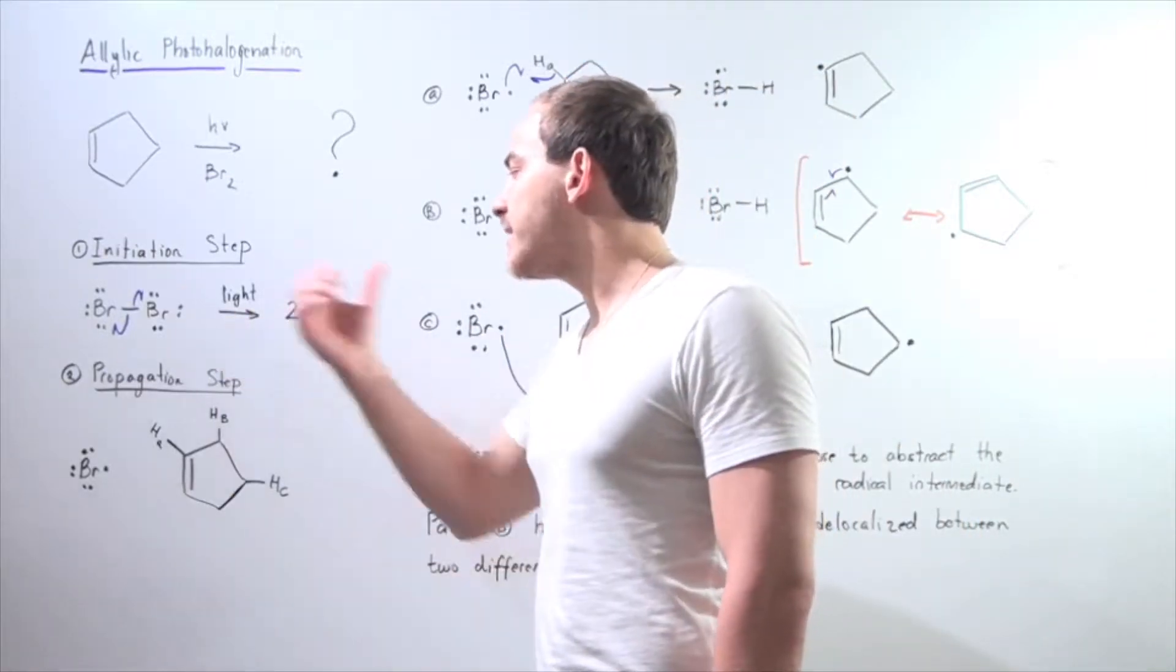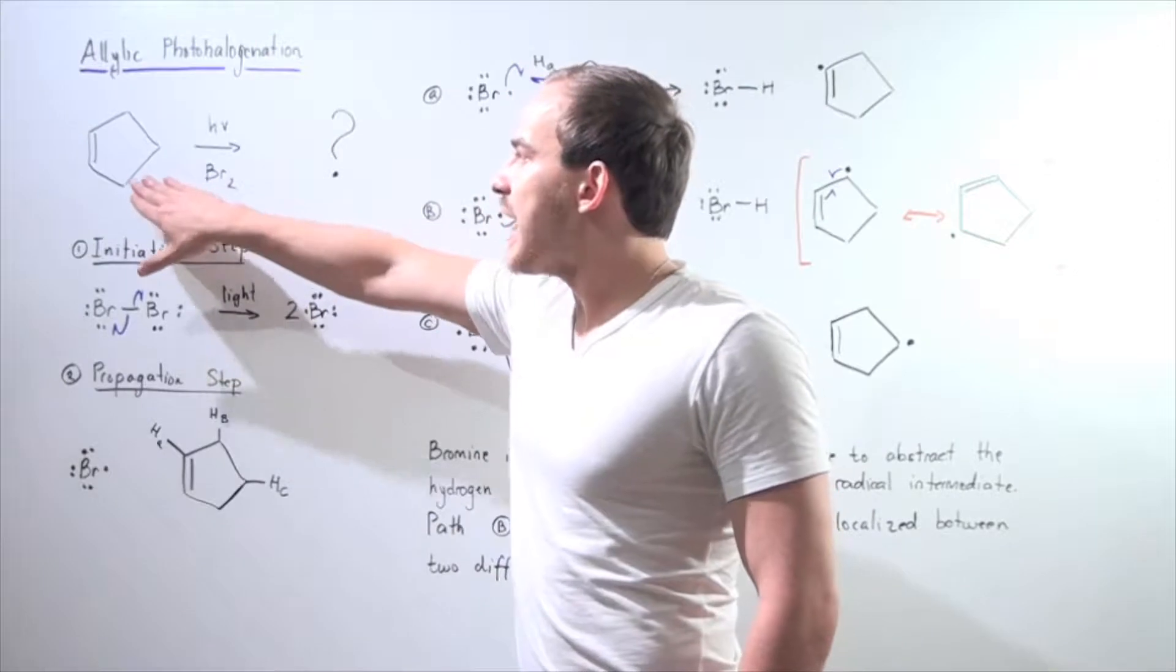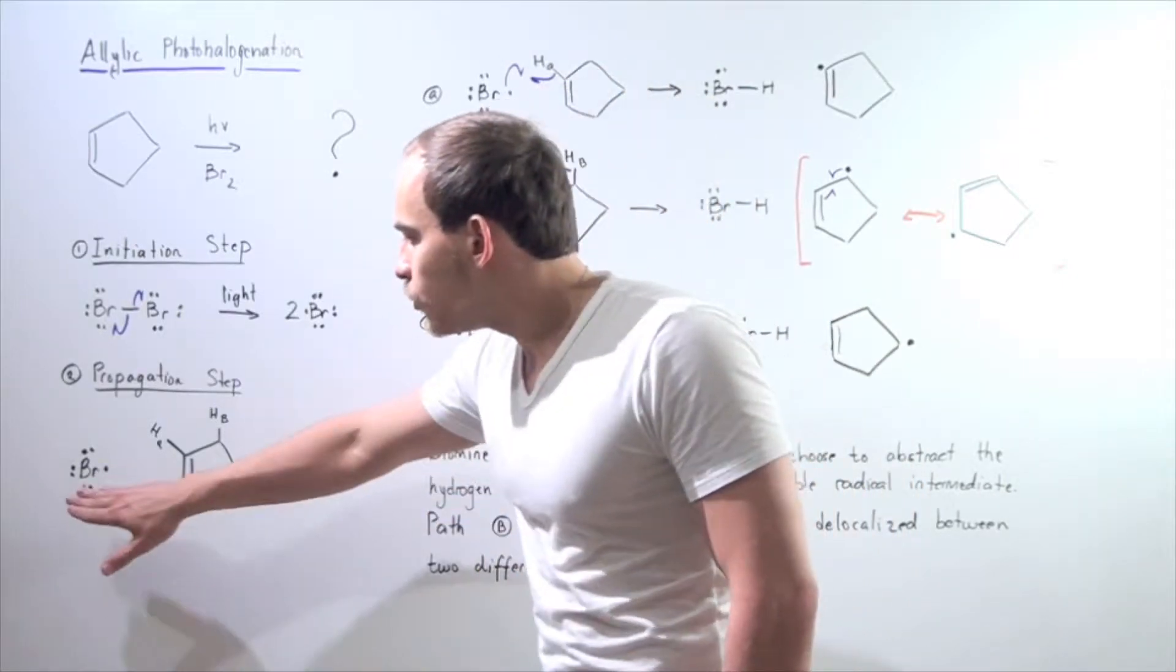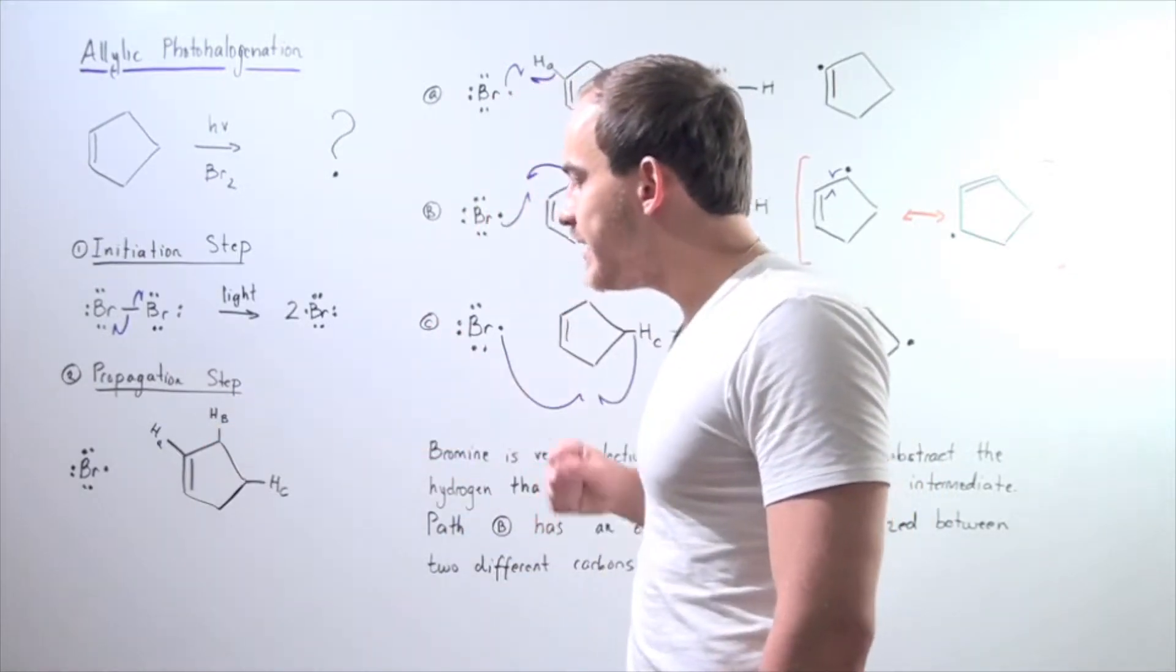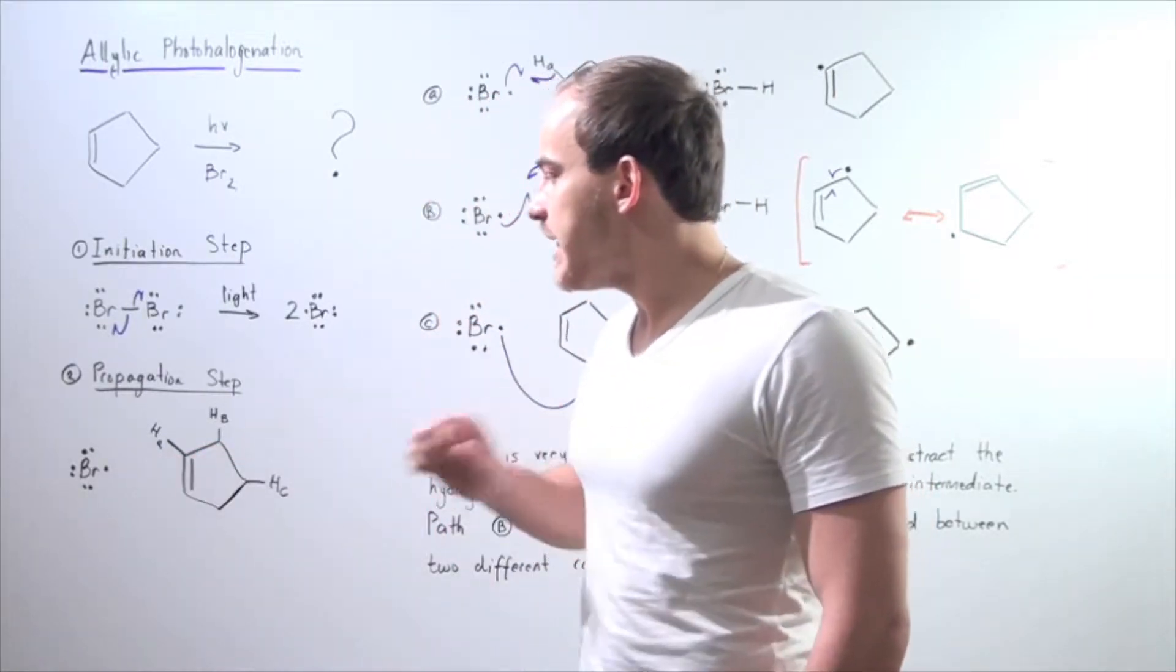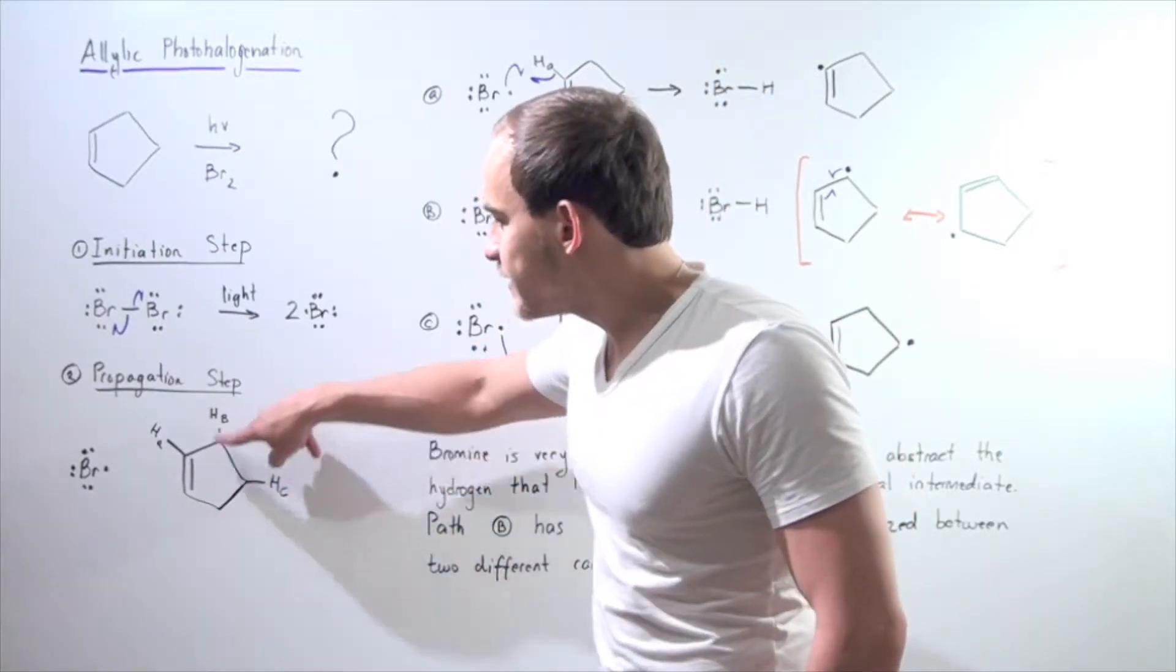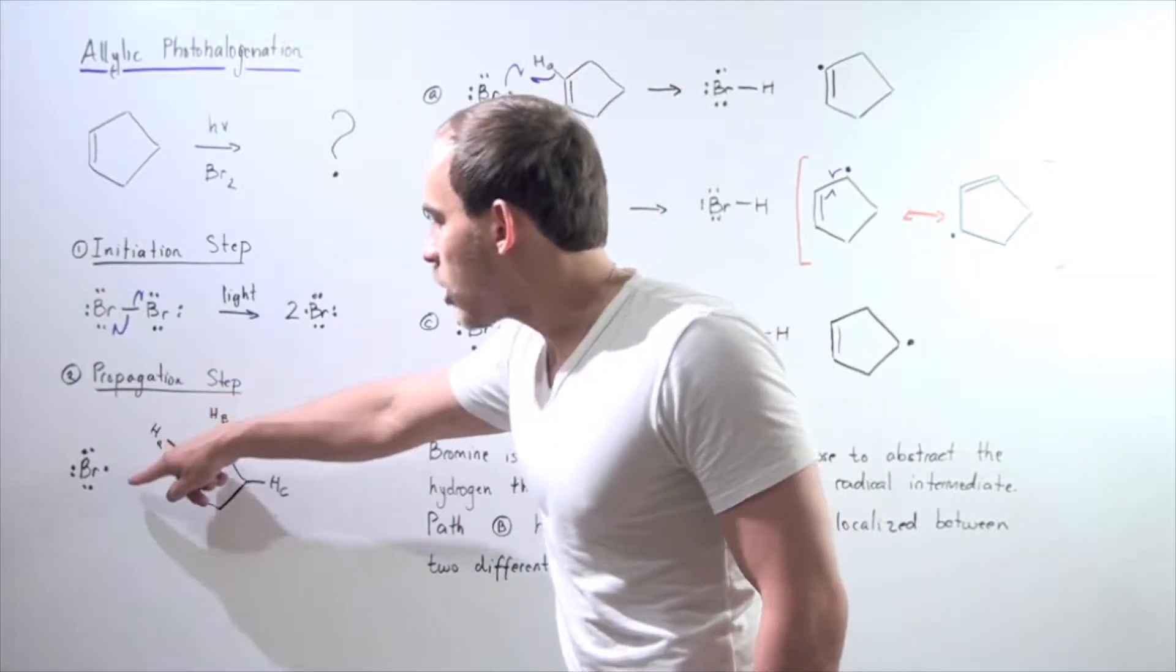So let's look at our second step, the propagation step. In the propagation step, we take one of these chain-carrying radicals and mix it with our cyclopentene, with our alkene. Now, which one of the H atoms will this bromide radical abstract? Remember, bromide is very selective in which H atom it takes away. Notice that this cyclopentene has three different H atoms that can potentially be abstracted. We have this H atom, let's name it H subscript A. We have this different H atom, let's name it H subscript B, and the final one, H subscript C. Notice this is identical to this one and this is identical to this H. So we're only going to look at this H, this H, and this H, because these are the distinct H atoms.